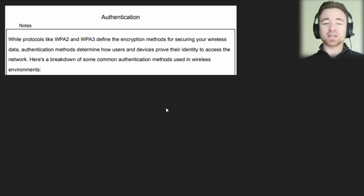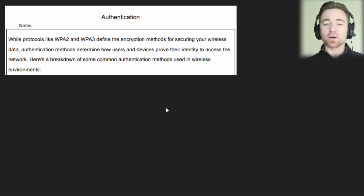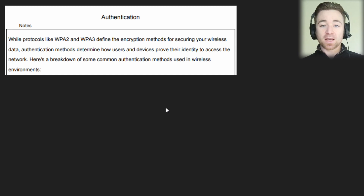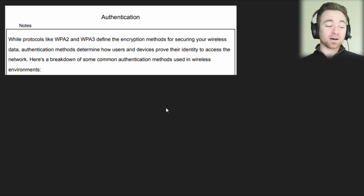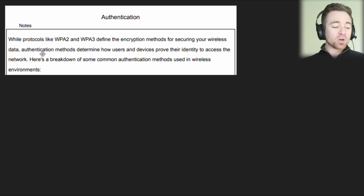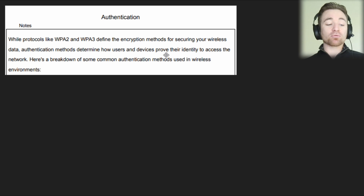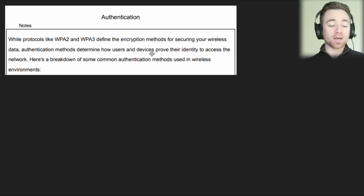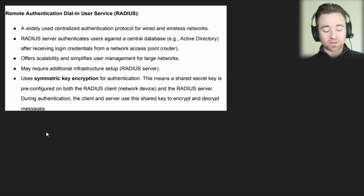We also have authentication. There are different methods of authenticating yourself to a network — of telling the network 'I am who I say I am.' We're going to go through some of the key differences between the authentication methods you'll need to know for your exam, how you can tell them apart, and in what circumstance you might want to use one over the other. Authentication methods determine how users and devices prove their identity.